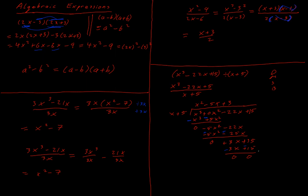For the final step, x divides into 3x to give plus 3. We multiply 3 by (x plus 5) to get 3x plus 15, then subtract, giving 0 remainder. The fact that we get zero remainder tells us that x plus 5 divides perfectly into x³ minus 22x plus 15 — meaning x plus 5 is a factor.